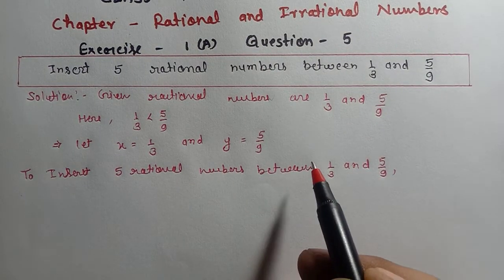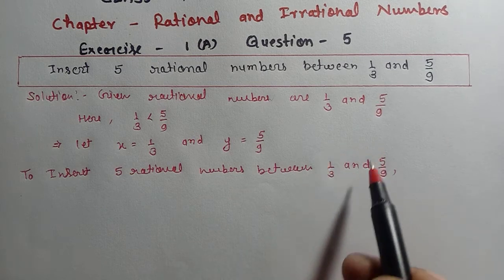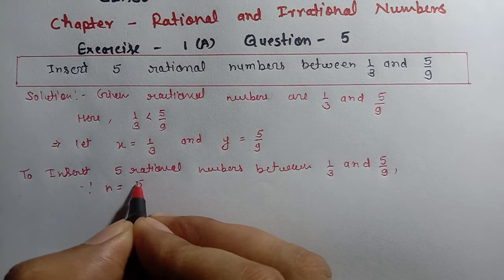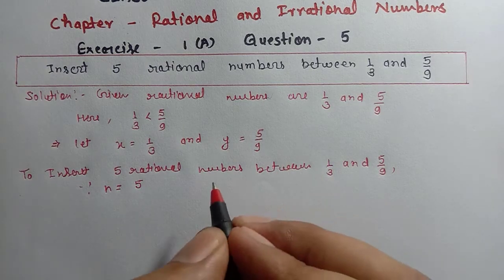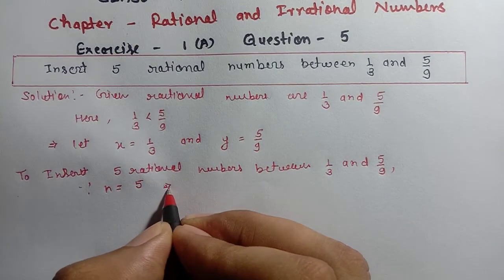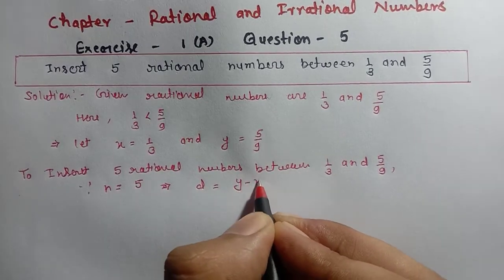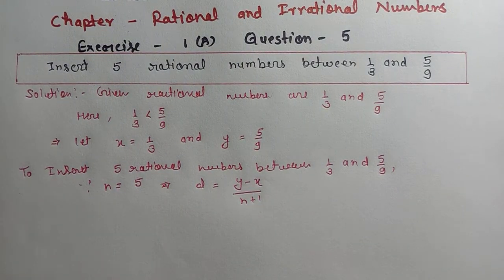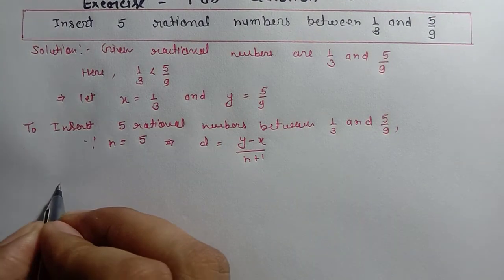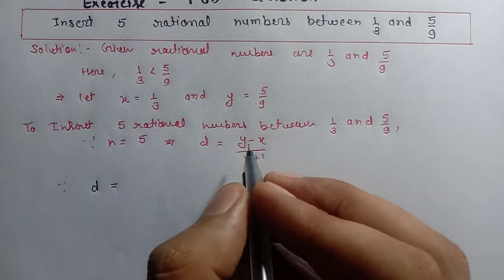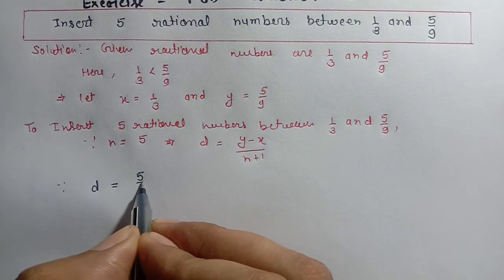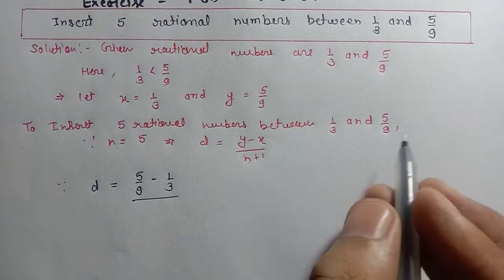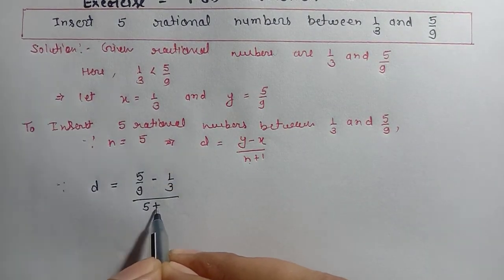To insert 5 rational numbers between 1/3 and 5/9, हमें इन दोनों के between में 5 rational numbers insert करने हैं। So हमारे जो n की value होगी वो 5 होगी। And मैंने आपको formula बता रखा है — formula क्या होता है: d = (y − x) / (n + 1) का हम use करेंगे।